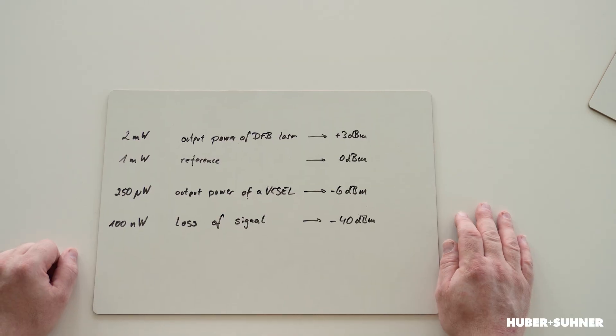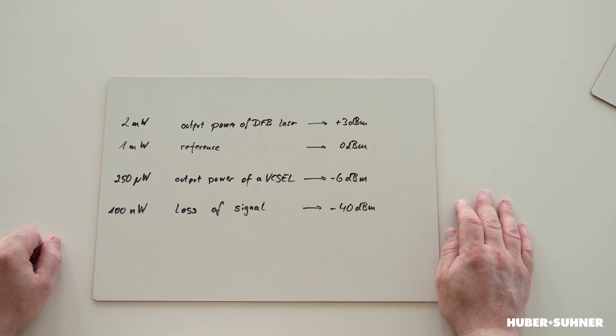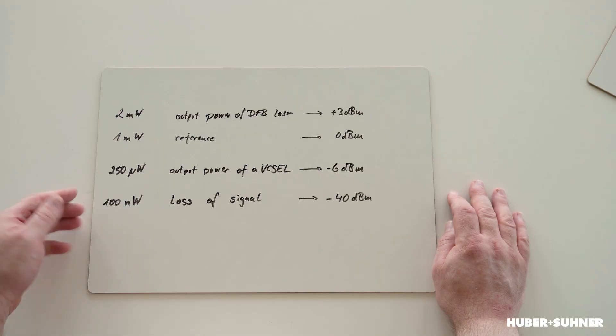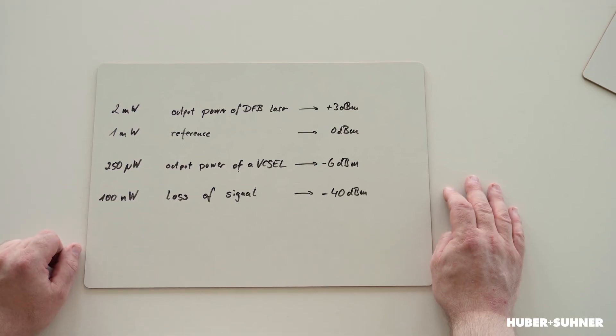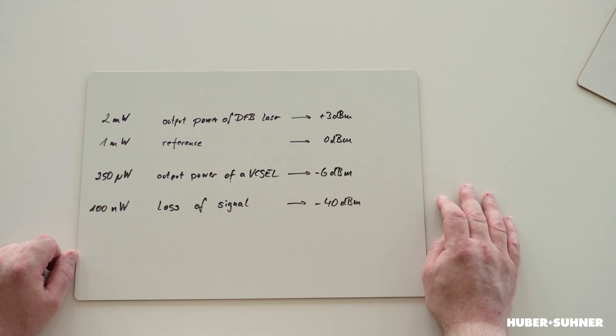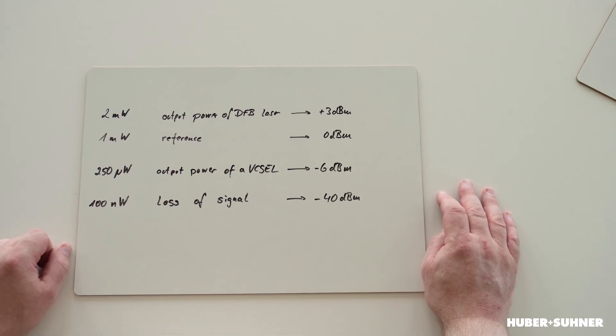If we are talking about power, also about optical power, the base unit is watts. Here we have some examples from optical networks. For example, the output power of DFB lasers can be 2 milliwatts. If we take the output power of VCSELs, they are used for multimode applications, this can be 250 microwatts, and the loss of signal situation is, for example, 100 nanowatts.